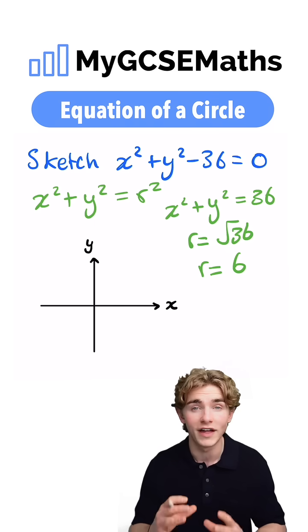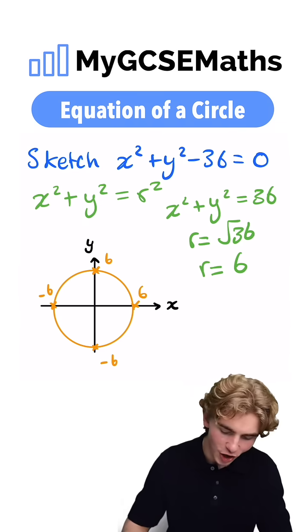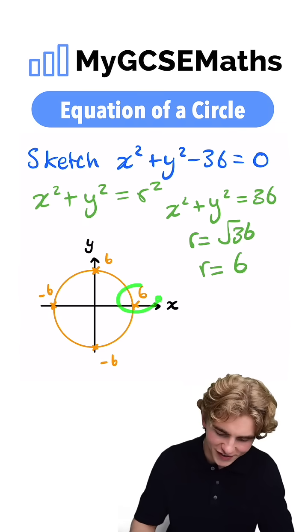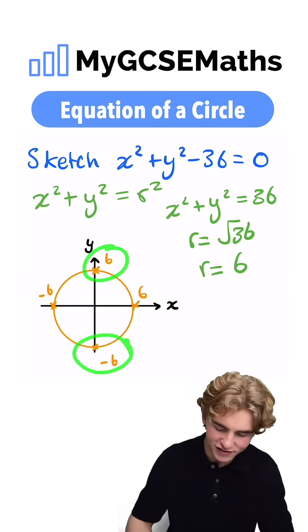Now all we need to do is draw that circle on. We can see that when we draw our circle on, we have x-intercepts of 6 and negative 6 and y-intercepts of 6 and negative 6 as well.